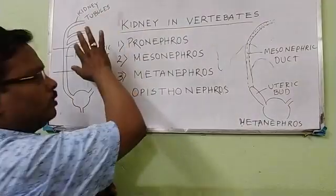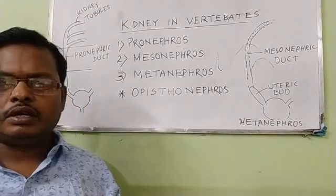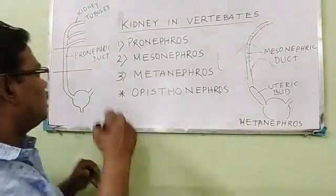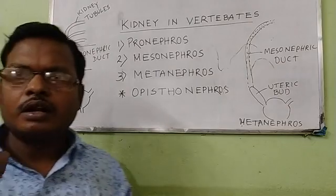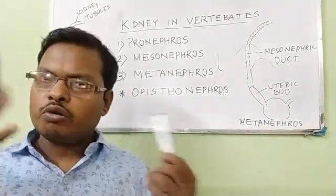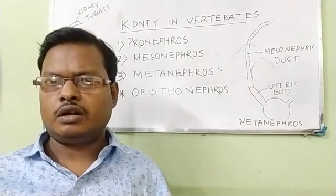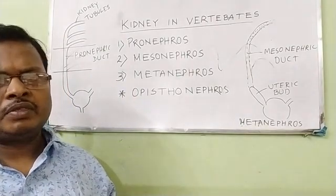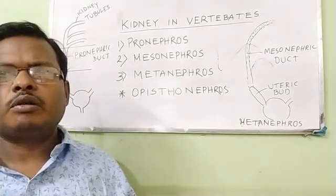All the kidney tubules of the Pronephros are lost during formation of the Mesonephros. A new set of kidney tubules is developed from the middle part of the nephrogenic mesoderm. These are more complicated, more in number, and more convoluted. This is due to the production of more excretory product, and hence the kidney needs to be more advanced.